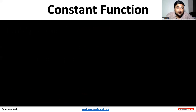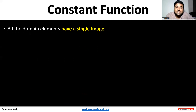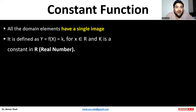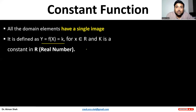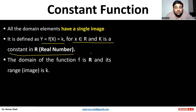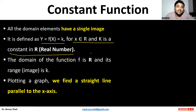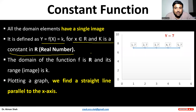Then we have the constant function. All the domain elements have a single range in the constant function. It is defined as y = f(x) = k, where x belongs to R and k is a constant in R. So the domain of the function f is R, that is real numbers, and its range is k. If we plot the graph, we find a straight line which is parallel to the x-axis — a horizontal line. So when x = 1, y = 7; when x = 2, again y = 7. So here y = 7 is our constant function, and therefore we have a horizontal line.